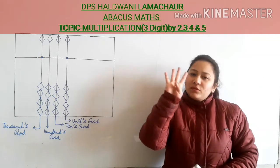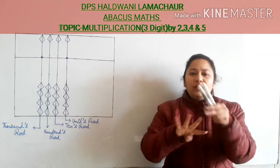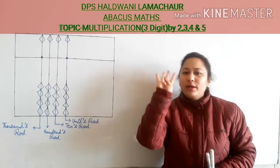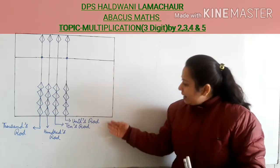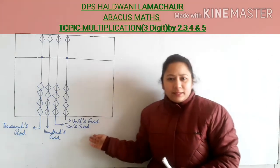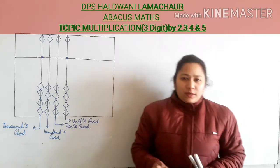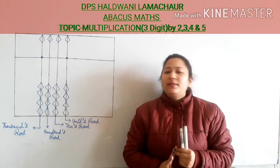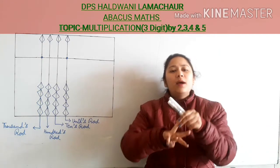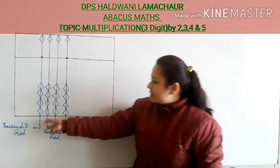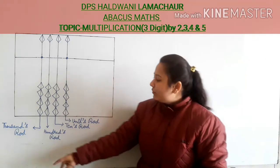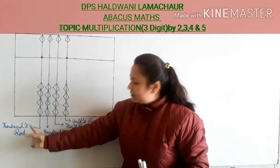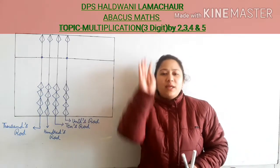Today we will take 4 digits: 2, 3, 4 and 5. We will do a 3-digit multiplication by these 4 numbers. Here I have drawn the Abacus tool. You are quite familiar with this Abacus tool. Always in our sums we use 3 rods, but today I have drawn one more rod which is the thousands rod. Today we will do the calculation in this rod also, so now we are taking 4 rods.